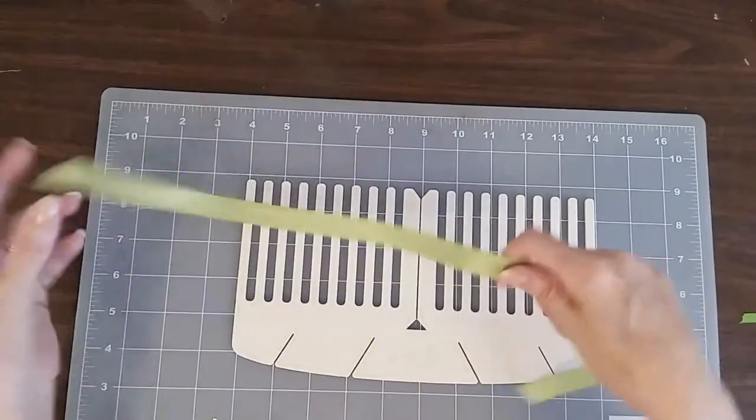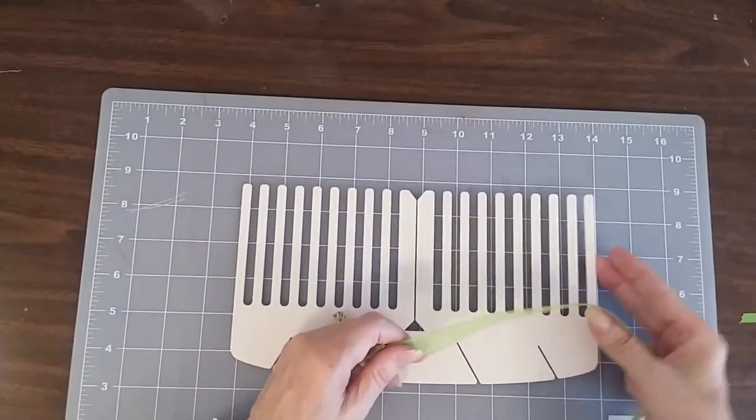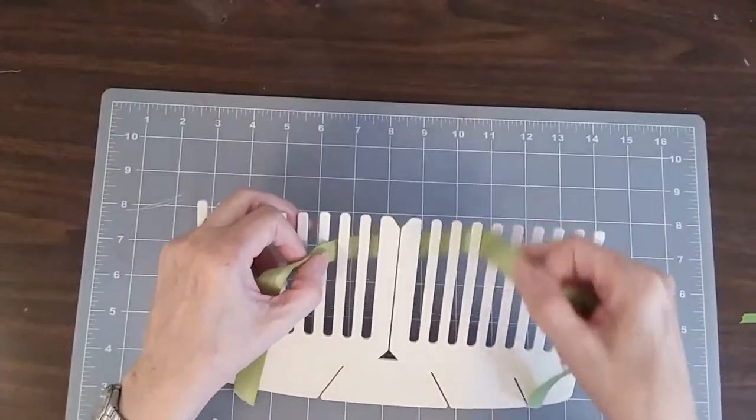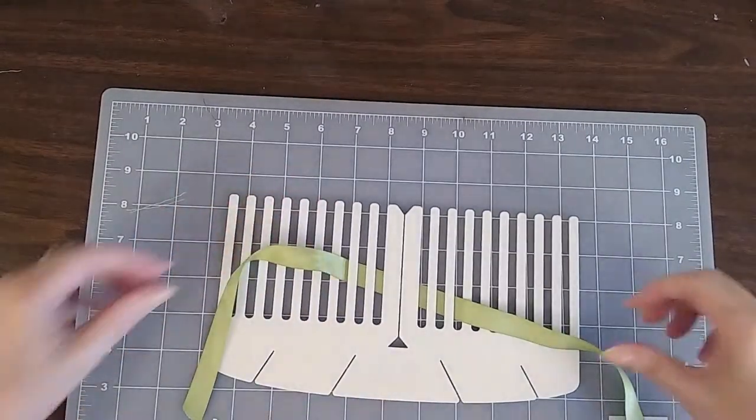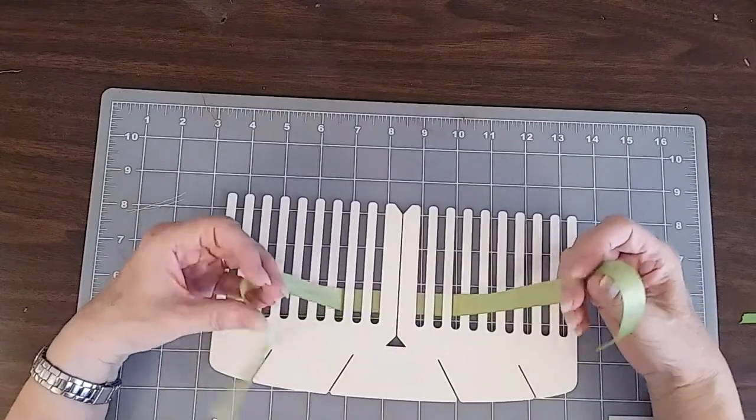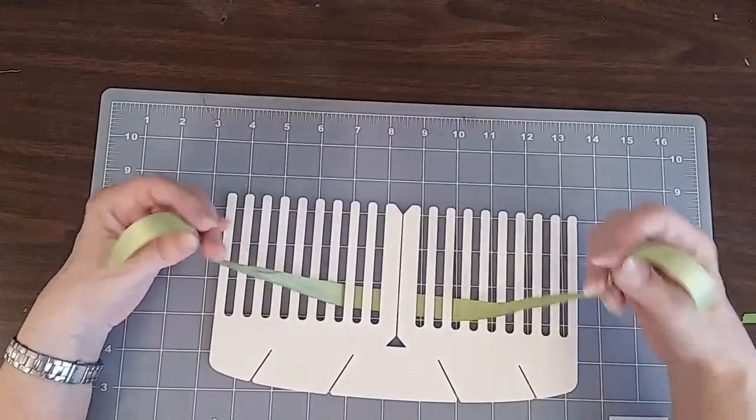So here's how I do a bow using this. Now the bow loom has measurements along the bottom here to give you an indication of how wide your ribbon is going to be or how long your bow is going to be.